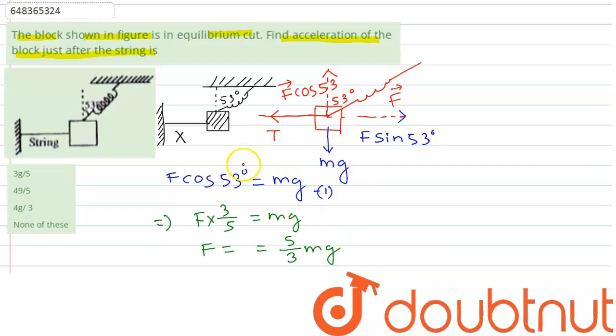Now when we cut this string, then the tension will be 0. So the force that will produce the acceleration will only be this F sin 53 amount of force. Mass into acceleration we can write as F sin 53 degrees. F sin 53 is 4 divided by 5. So this is our mass into acceleration.